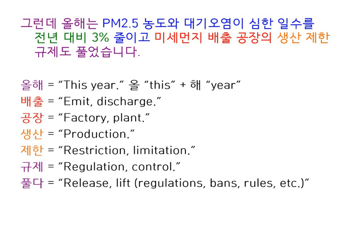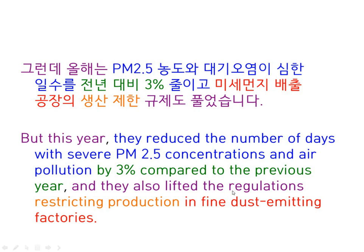Very often in this kind of news language or academic language, you'll see sentences where there's just a lot of nouns basically in a row. Like this sentence: 미세 먼지 배출 공장의 생산 제한 규제. It's just basically a string of nouns, but when you translate it into English you kind of have to expand it a bit with connecting words and verbs. From 미세먼지 to 규제, it's all nouns in Korean, but in English you have to write it out a bit more. So if you're reading something like this and it doesn't make sense at first, just keep in mind that you have to expand it a bit more in English.